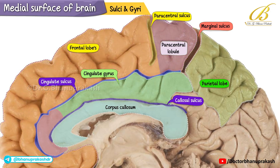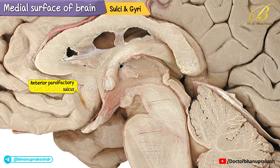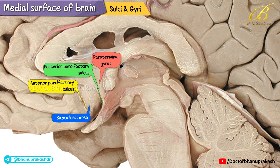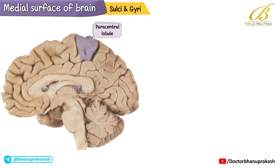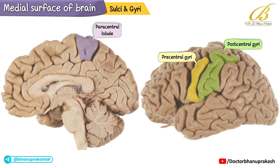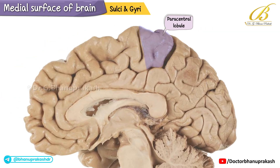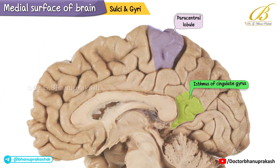From anterior to posterior, we observe the anterior parolfactory sulcus, subcallosal area, posterior parolfactory sulcus, paraterminal gyrus, and finally the lamina terminalis and third ventricle. The paracentral lobule, a continuation of the precentral and postcentral gyri on the medial surface, serves as a higher center for micturition and defecation. Finally, we pinpoint the isthmus of the cingulate gyrus, a narrow region located between the splenium of the corpus callosum and the calcarine sulcus.